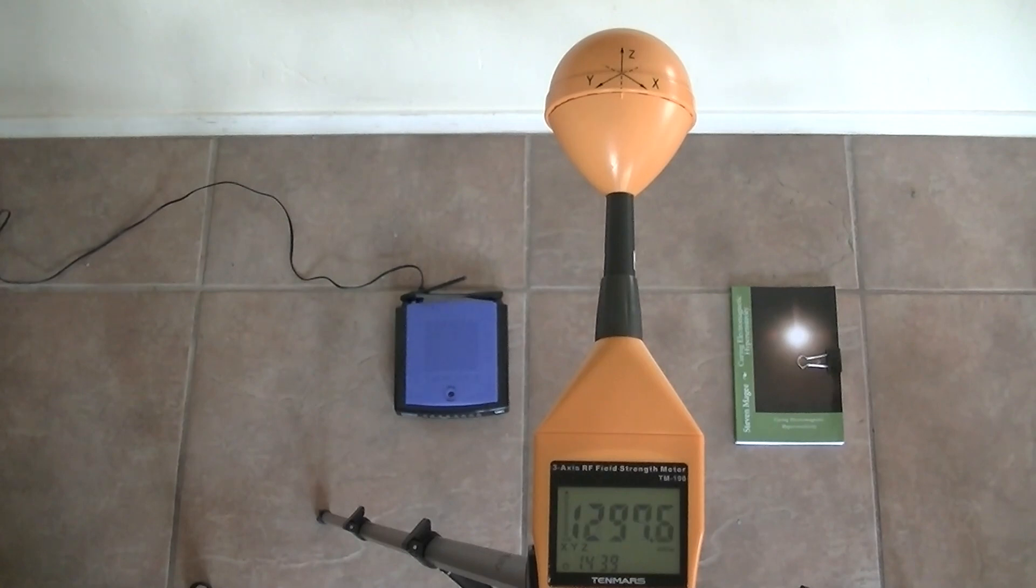So right now we're getting around 1300 millivolts per meter. So that's going to change when I put the mirrored window film over it.